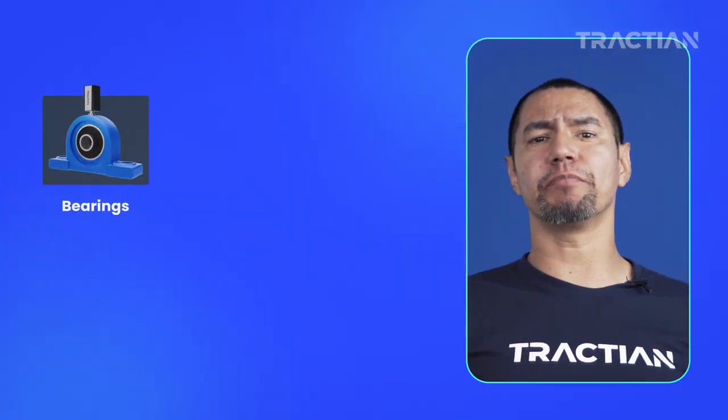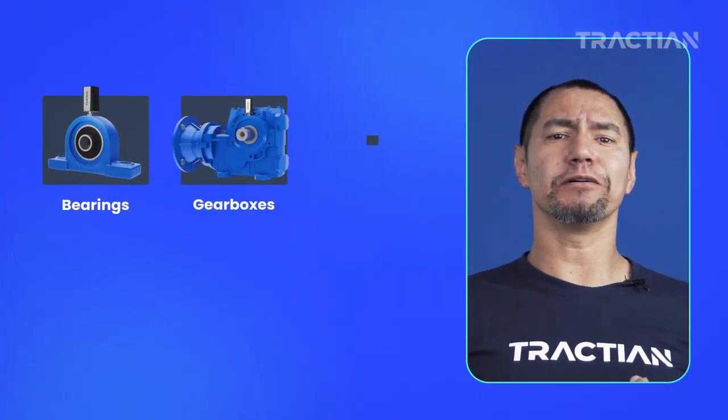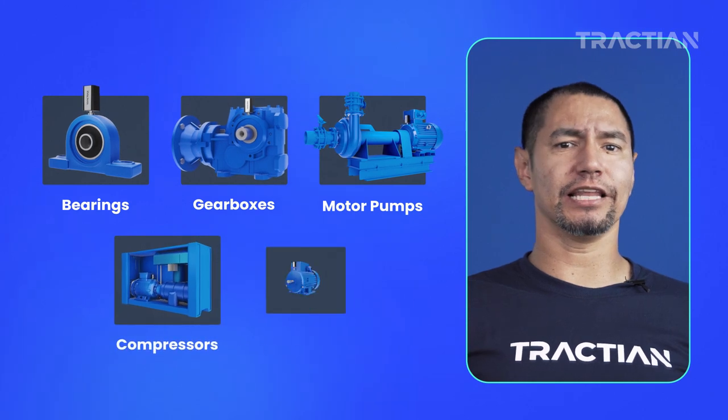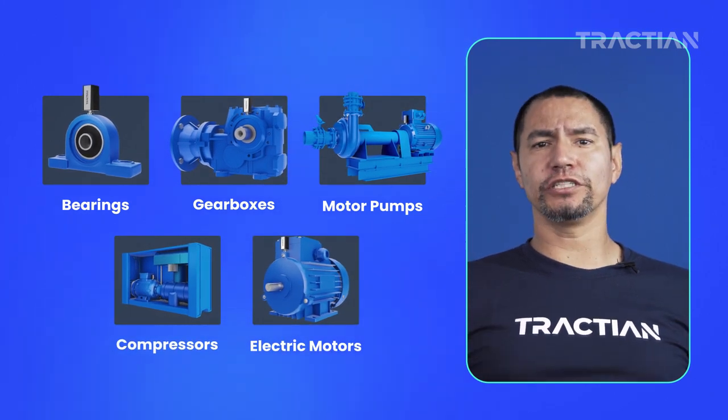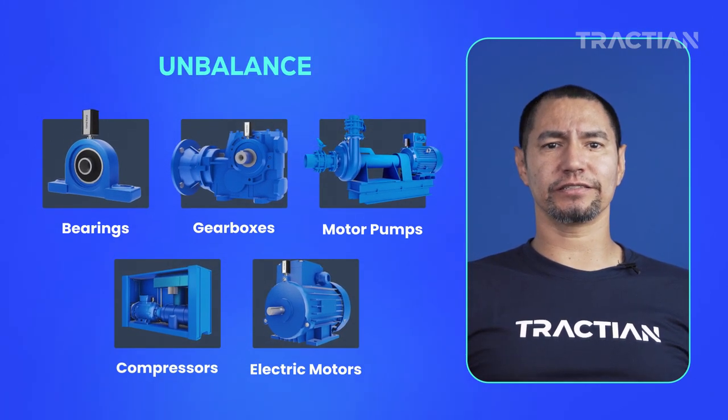Bearing systems in bearing houses, gearboxes, motor pumps, compressors, and electric motors — these are the machines in which we can detect unbalance.